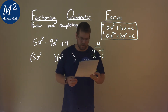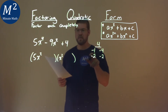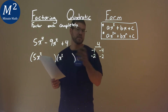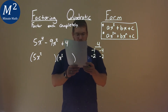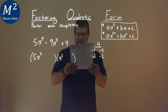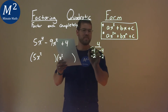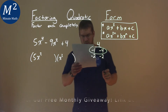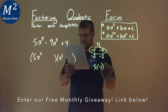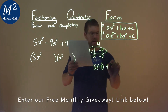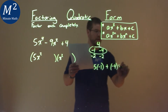Now what we're asking ourselves is: will 5 times one of these numbers in a pair, plus 1 times the other number, give us negative 9? That comes out to be negative 1 and negative 4. 5 times negative 1, plus negative 4 — or 1 times that — will equal negative 9.